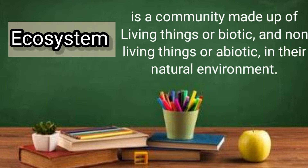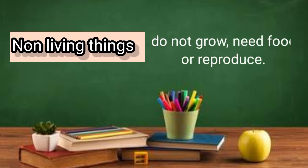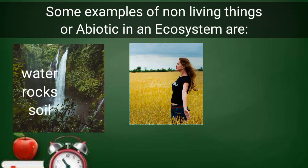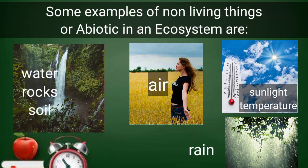An ecosystem is a community made up of living things or biotic and non-living things or abiotic in their natural environment. Non-living things refers to materials that do not grow, eat food, or reproduce. Some examples of non-living things or abiotic in an ecosystem are water, rock, soil, air, sunlight, temperature, and rain.